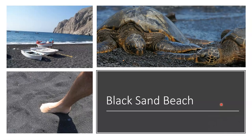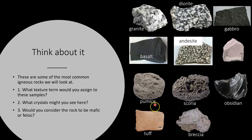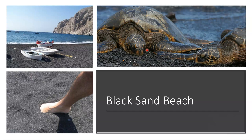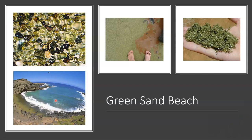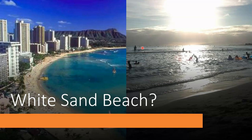Once igneous rocks start weathering and eroding — which we'll talk about with sedimentary rocks next — they will form soil and sand related to the color of the rock. For instance, in the Hawaiian Islands where basalt is common, you end up with black sand because the basalt is black. The Hawaiian volcanoes also produce olivine, so you'll see green sand beaches, though less common than the black sand beaches.